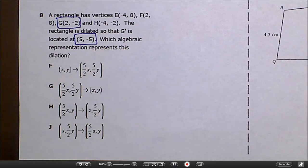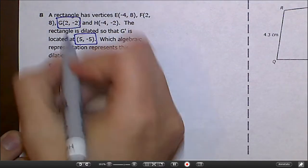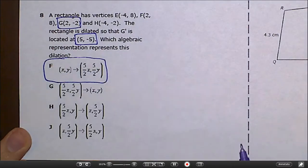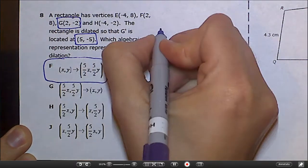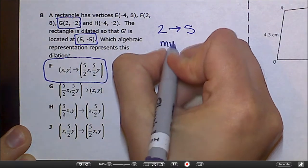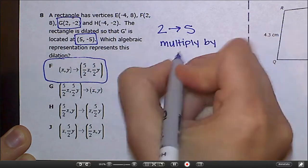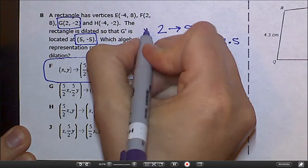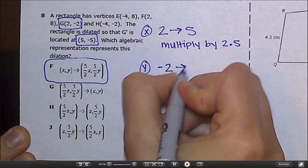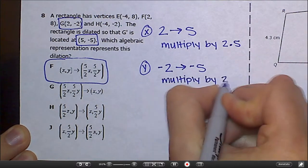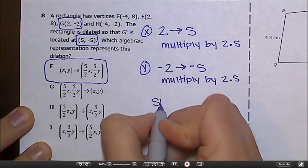All right, so all we have to do here is look and see. First of all, it should always start with (x, y) because this is our x and this is our y. We haven't done anything to them yet. And so really, I can pretty much guarantee that F is going to be our answer because none of the others start with that. But let's go ahead and check this out. So to go from 2 to 5, what happened? Well, I had to multiply by something. Multiply by 2.5. 2.5 times 2 is 5. Okay, now let's look at our y values. This is our x value. Let's look at our y value. To go from -2 to -5, same thing. We multiply by 2.5. So I can pretty much say that my scale factor is 2.5.